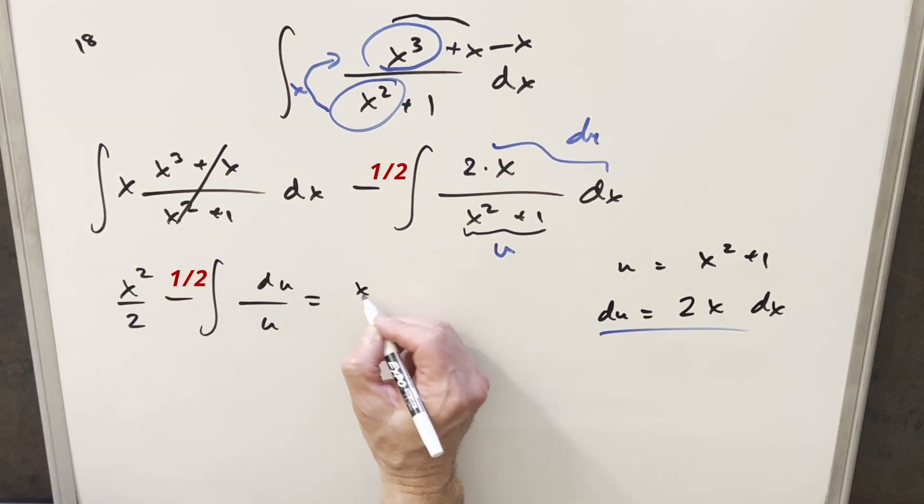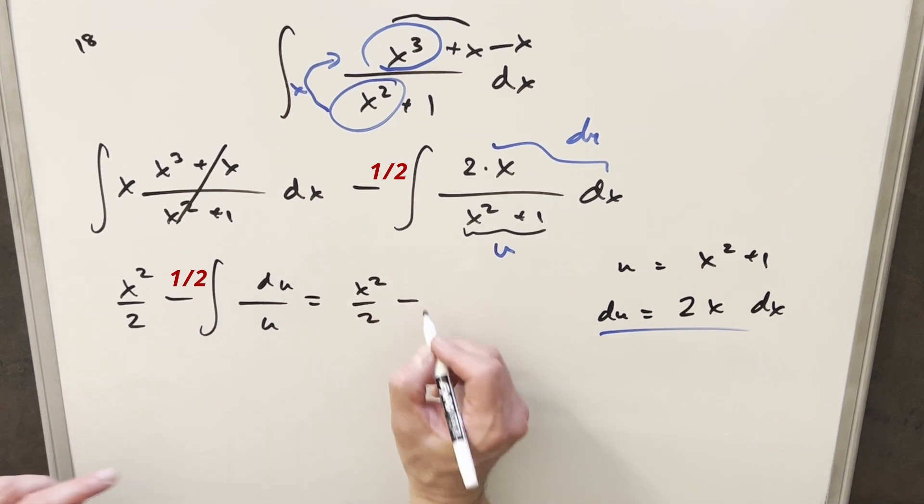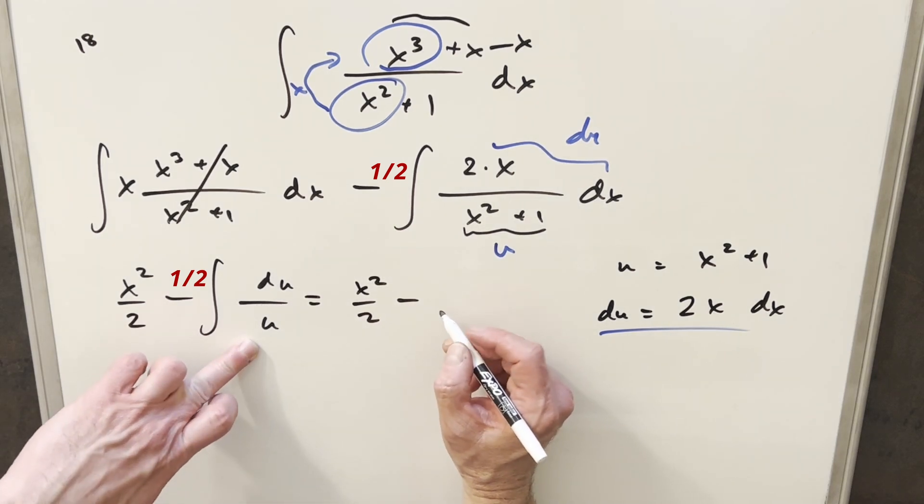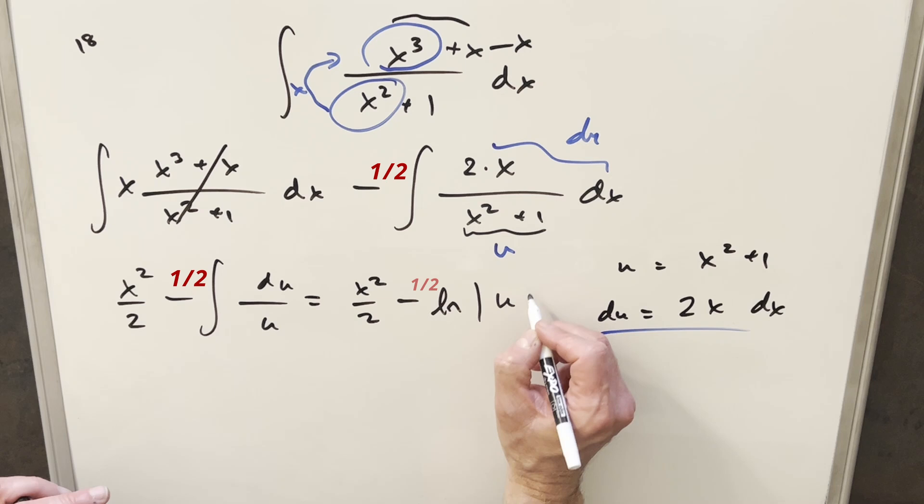So we'll go ahead and do this. We'll bring over our x squared over 2. This here is going to become minus, derivative of this is going to be just natural log, absolute value of u.